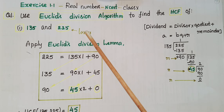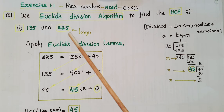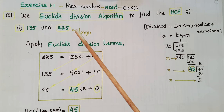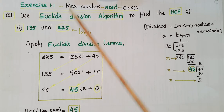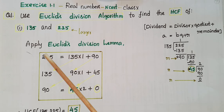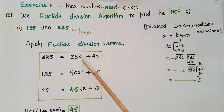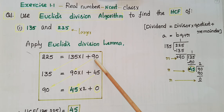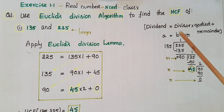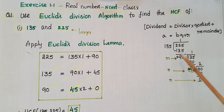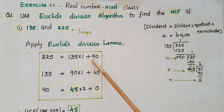To find the HCF of these two numbers, apply Euclid's division lemma. The larger number is 225, so 225 is equal to 135 into 1 plus 90. If you divide 225 by 135, then 135 once is 135, and the remainder is 90.